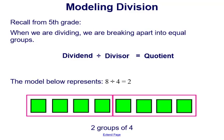So the model below here is representing 8 divided by 4 equals 2. So if we break it down we have a dividend of 8. We have our 8 total green squares: one, two, three, four, five, six, seven, eight.